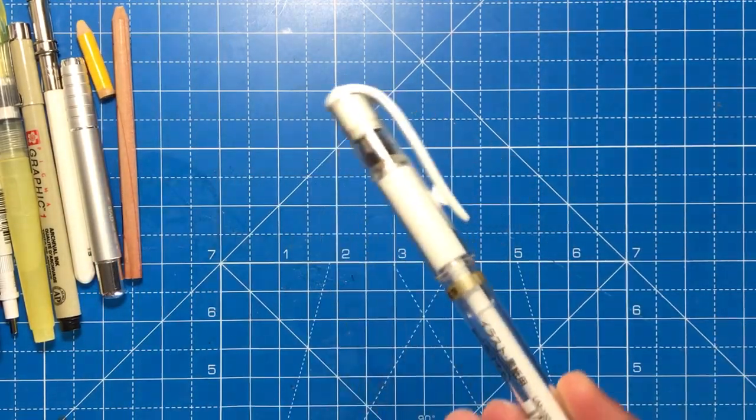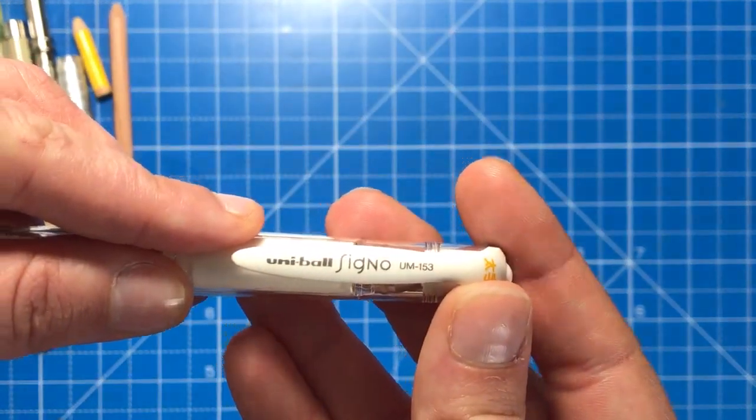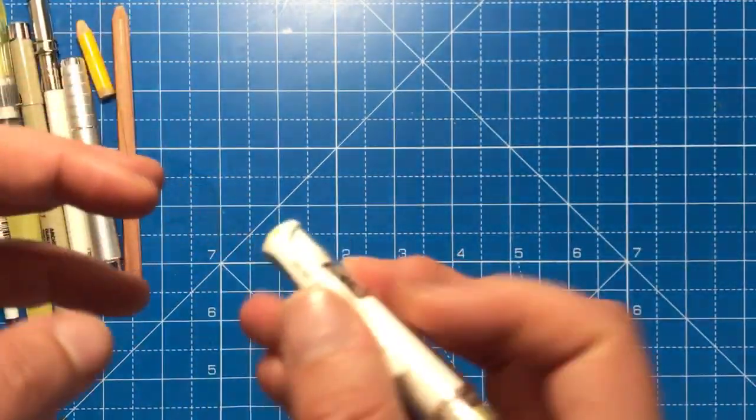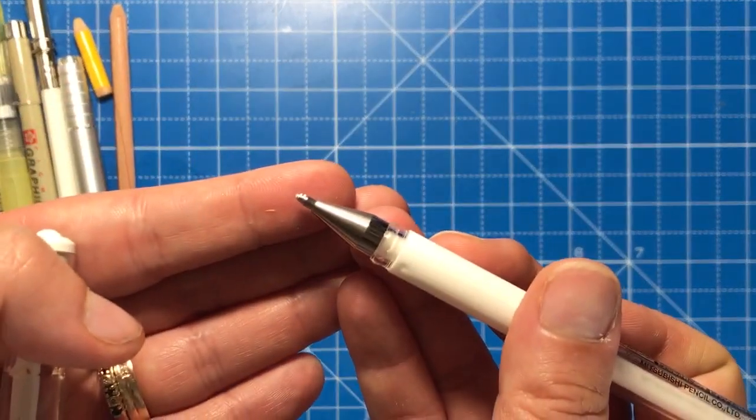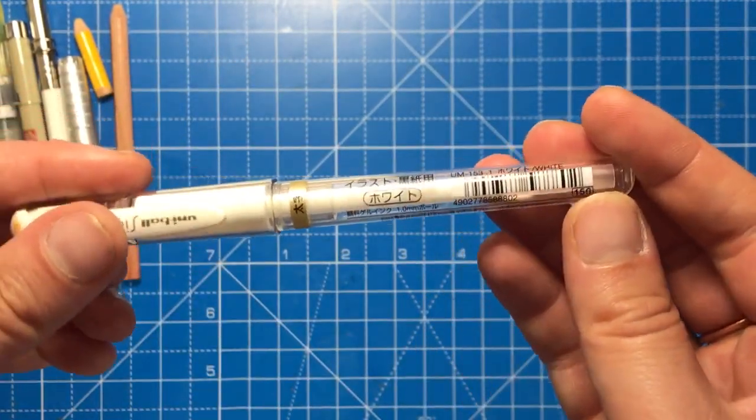The next product I use is a white gel pen. This particular one is a Uniball Signo and this is the only one that I use because I find it performs the best. It never stops or stutters, it has a really thick ink flow and it's very opaque as well.